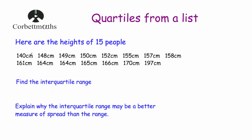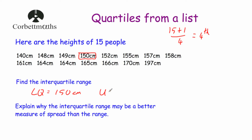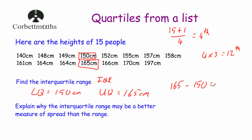Our last question gives the heights of 15 people, already placed in order: 140cm, 148, 149, 150, all the way up to 197cm. We're asked to find the interquartile range. With 15 values, we add 1 to get 16 and divide by 4, which equals 4. So our fourth value is our lower quartile, which is 150cm. For the upper quartile, the position of the lower quartile is 4, so 4 times 3 equals 12 — our 12th value is our upper quartile, which is 165cm. To find the IQR, we take 165 and subtract 150, giving us 15cm. So our interquartile range is 15cm.